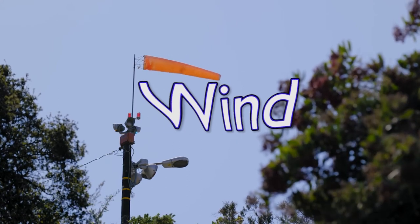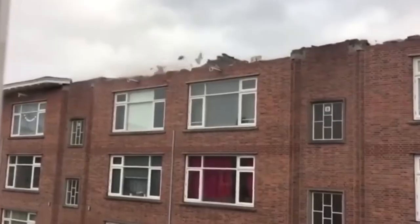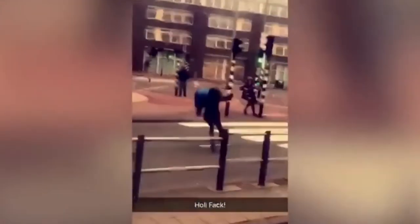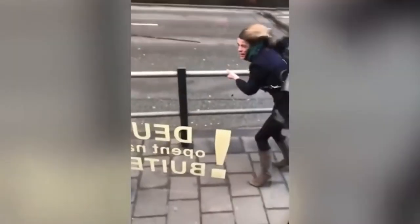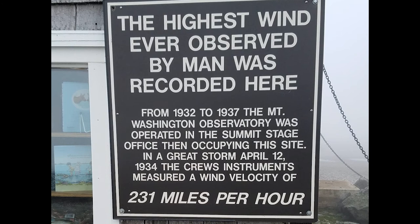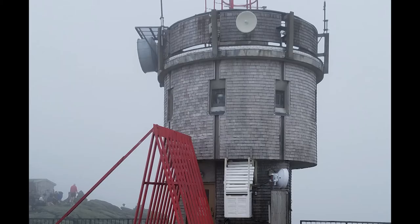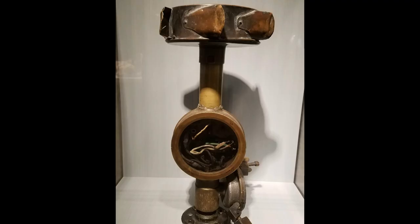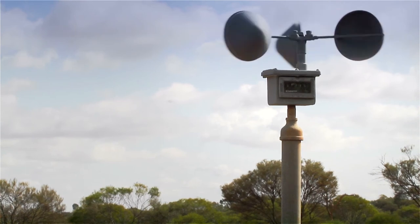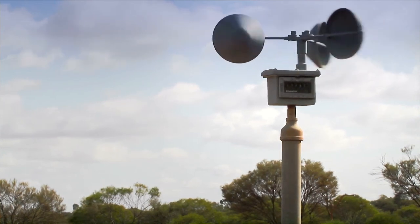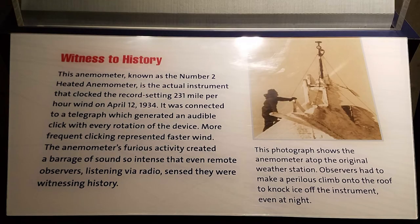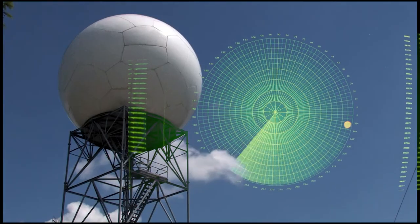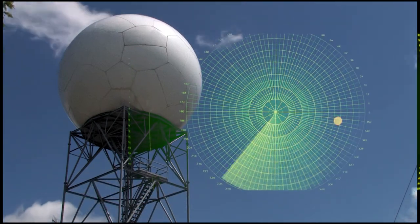Wind is moving air and is caused by differences in air pressure within our atmosphere. Air under high pressure moves toward areas of low pressure; the greater the difference in pressure, the faster the air flows. In 1934, on the roof of a little wooden building atop Mount Washington in New Hampshire, an instrument called an anemometer made history, recording a wind speed of 231 miles per hour during a huge spring storm — the fastest wind gust ever recorded with such an instrument. More recently, sophisticated Doppler radar has been used to measure winds, recording a wind speed of 318 miles per hour in an Oklahoma tornado in 1999.